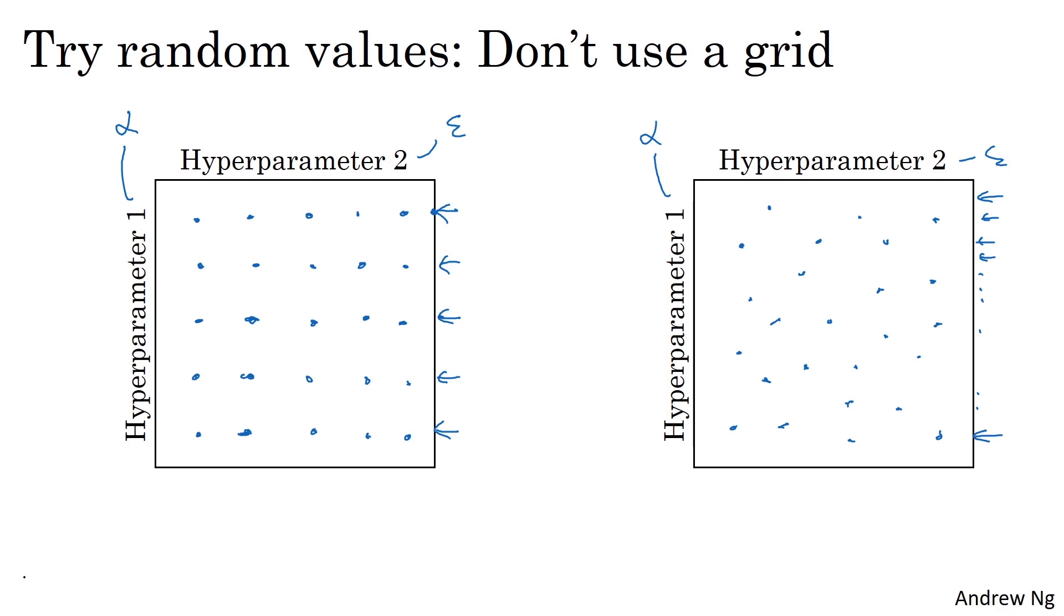I've explained this example using just two hyperparameters. In practice, you might be searching over many more hyperparameters than this. So if you have, say, three hyperparameters, instead of searching over a square, you're searching over a cube where this third dimension is hyperparameter three. And then by sampling within this three-dimensional cube, you get to try out a lot more values of each of your three hyperparameters. And in practice, you might be searching over even more hyperparameters than three.